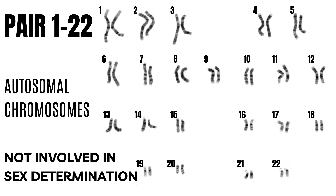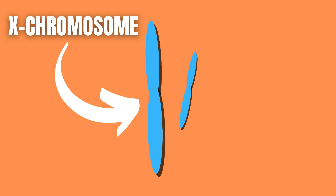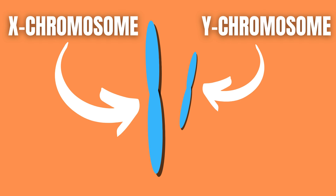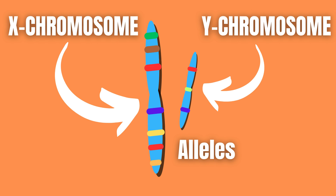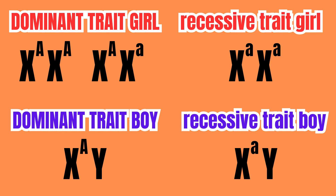Most traits are either autosomal, meaning that they are located on chromosome pairs 1 to 22, or X-linked, meaning that they are located on the X chromosome. Since the X chromosome is much larger than the Y chromosome, most traits located on the X chromosome do not have a corresponding allele on the Y chromosome. The resulting traits are therefore expressed in the following manner.